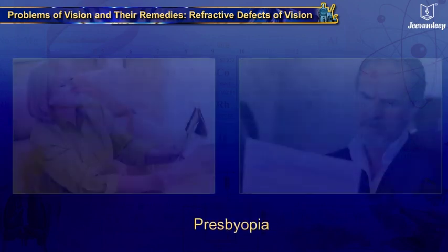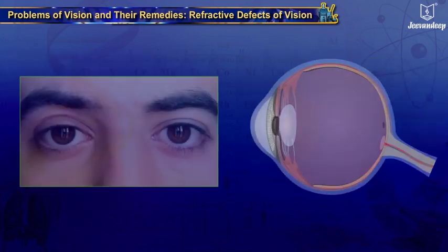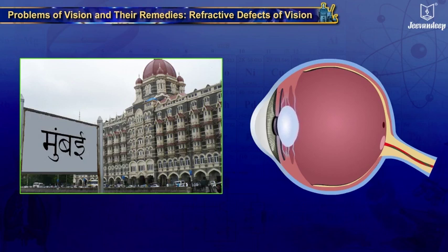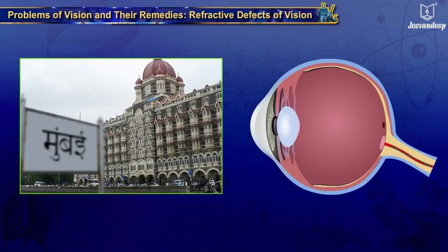Presbyopia is also called old age hypermetropia. It is the defect of vision in which aged people find it difficult to see nearby objects comfortably and clearly without spectacles. When a person is young, the lens is soft and flexible and allows the person to focus on objects both close and far. With age, the lens becomes more rigid and the power of accommodation of the eye decreases. The near point recedes and they find it difficult to see nearby objects comfortably and clearly without spectacles.